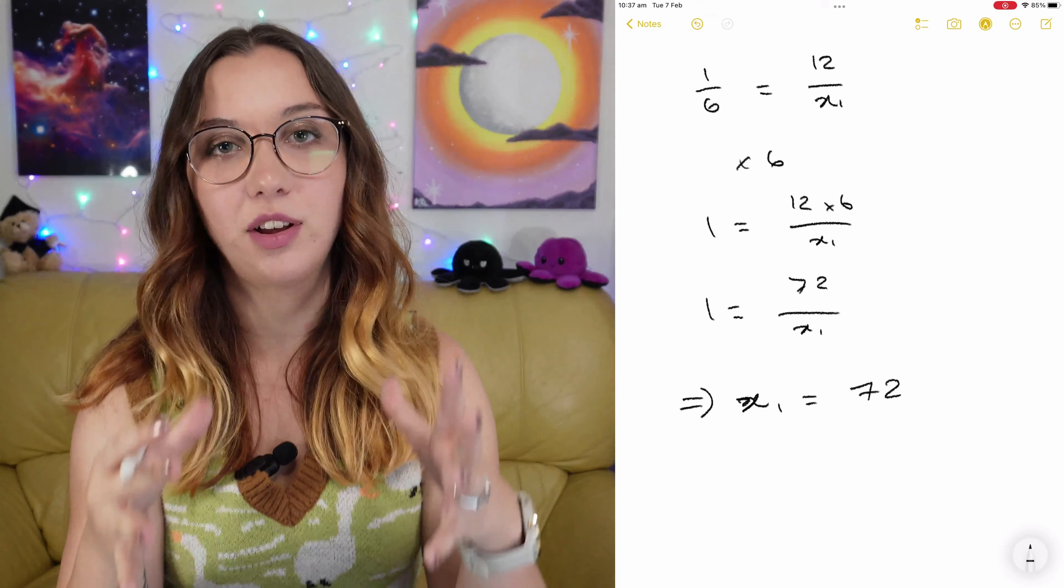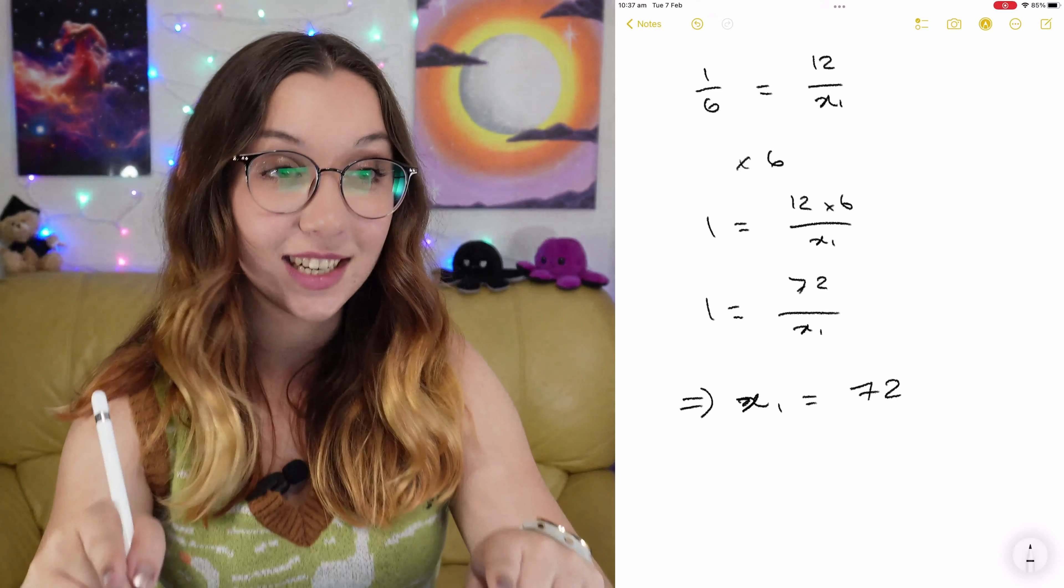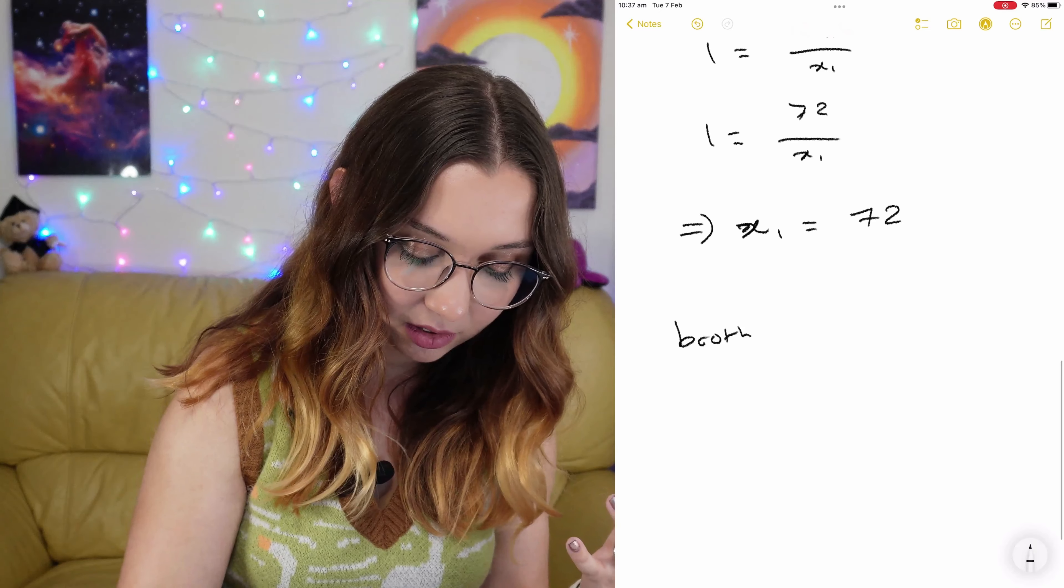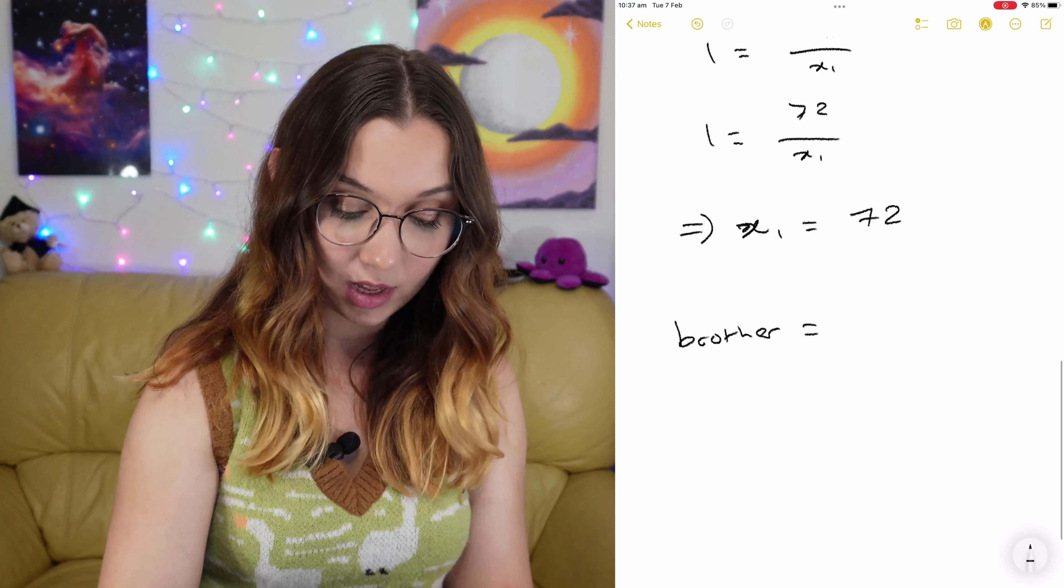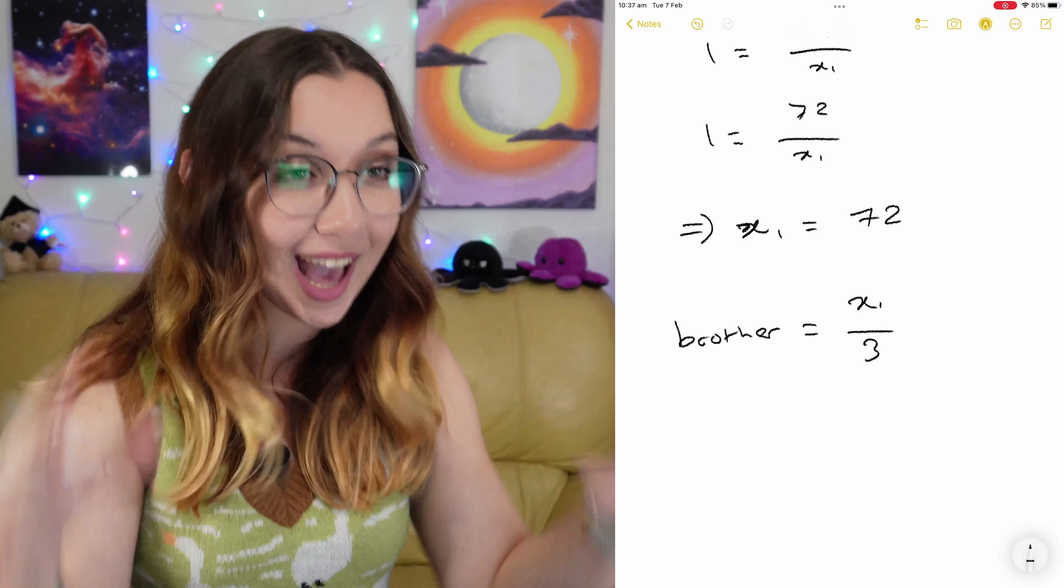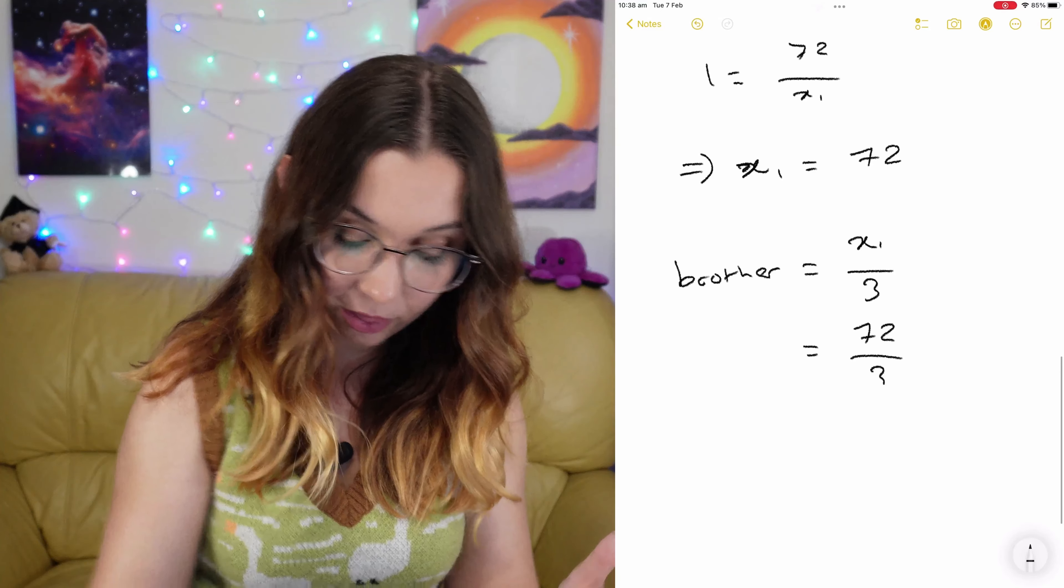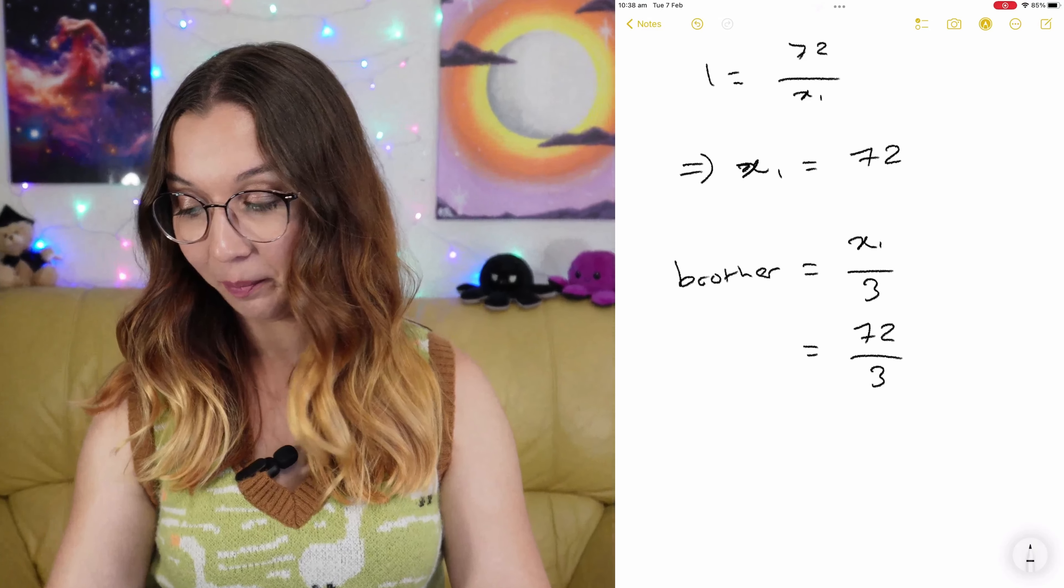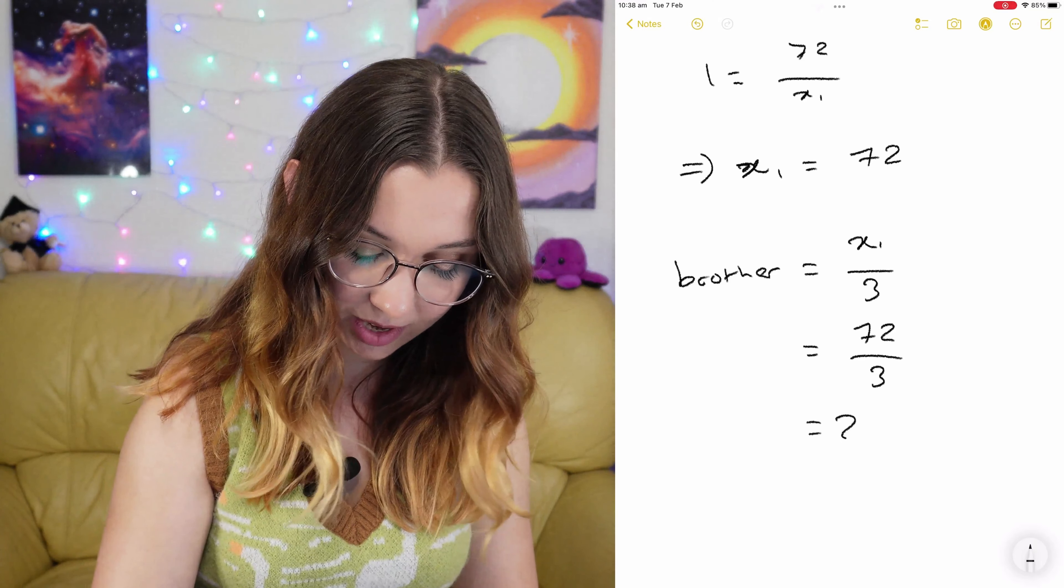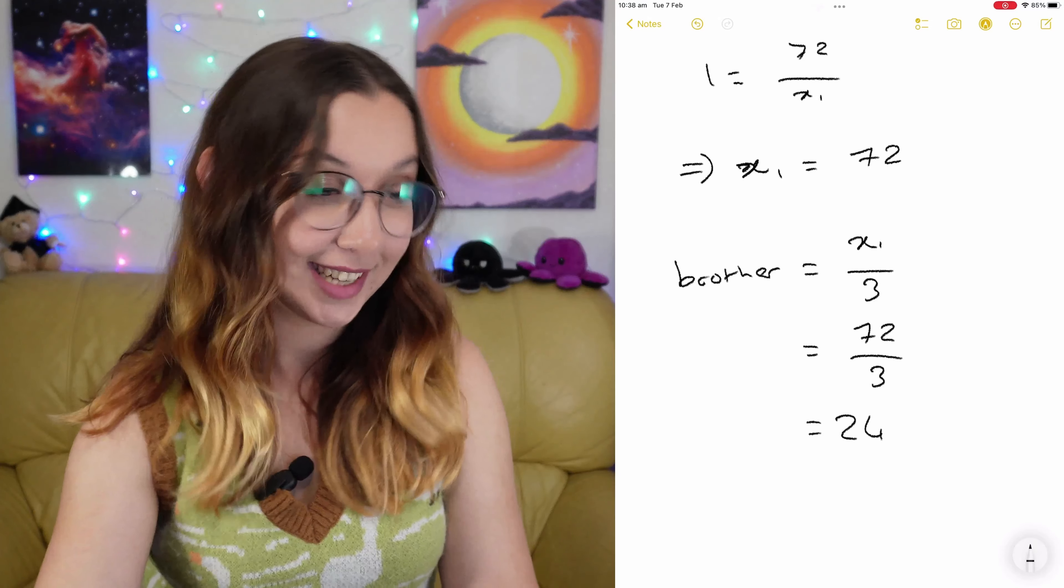We finally get our answer. Wait, no. He didn't give his brother 72 euros. He started with 72 euros. And the brother gets x1 on 3 because he gives his brother a third of what he had in total. So 72 divided by 3. 24 euros. So the answer is 24 euros. I did it.